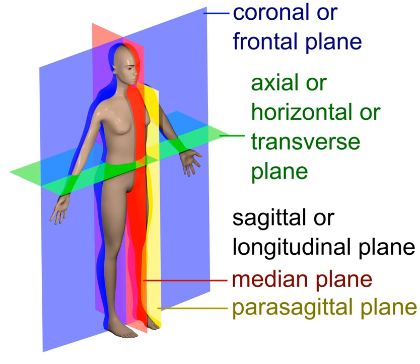The sagittal axis, or anterior-posterior axis, is the axis perpendicular to the coronal plane, i.e., the one formed by the intersection of the sagittal and the transversal planes. The coronal axis, medial-lateral axis, or frontal axis is the axis perpendicular to the sagittal plane, i.e., the one formed by the intersection of the coronal and the transversal planes.